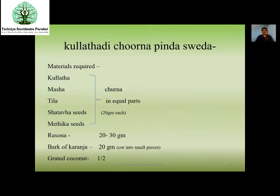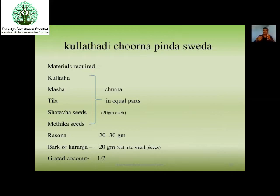Kulthadi Churna preparation: Kulthamasha, Tila, Shatava seeds, and Methi seeds in equal quantity, Rasona (garlic), Bark of Karanja, and grated coconut. Same preparation as Churna Pinda Sveda: first use grated coconut, add some Tila, then grated coconut and Karanja Bark Rasa, then add all the Churnas, fry completely, and make a Potali.